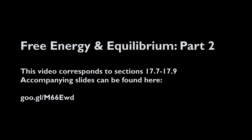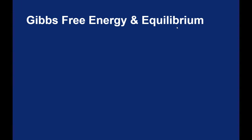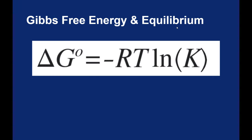The equation from the last video can be used directly to find an equilibrium constant. At standard conditions, that equation can be rewritten as: free energy under standard conditions equals the negative RT ln K, where K is your equilibrium constant. This is a relationship between Gibbs free energy and an equilibrium constant.